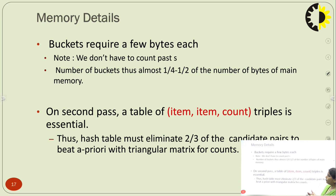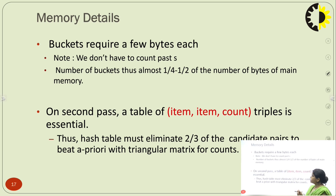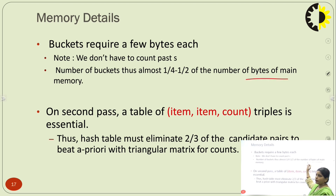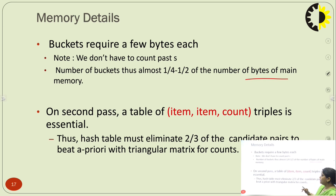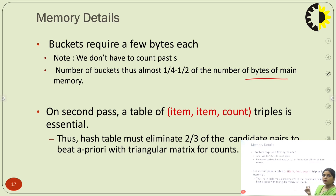This is the final answer for the PCY algorithm applied to market basket data — we perform these 5 steps and finally obtain the candidate pair set. Regarding memory details: each bucket requires a few bytes; we do not have to count past support values; and the number of buckets must be almost (1/4 − 1/2) of the number of bytes of main memory. In the second pass, the table of triples is essential, and the hash table must eliminate 2/3 of the candidate pairs to beat a-priori using triangular matrices.